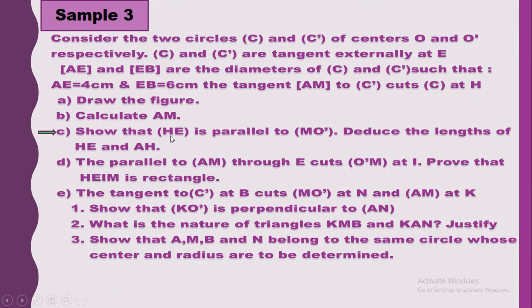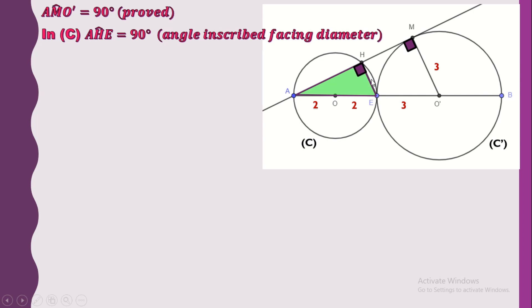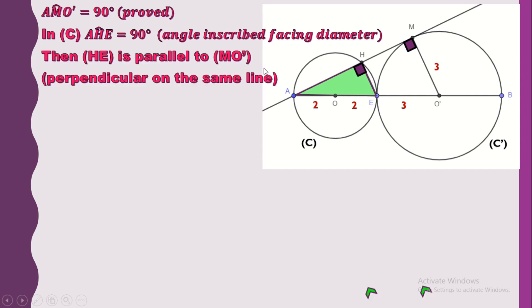Now in part C, show that HE is parallel to MO prime, then deduce the lengths of HE and AH. Note that H is a point on circle C, and whenever a point lies on a circle, the inscribed angle facing the diameter equals 90 degrees. So angle AHE equals 90 degrees. We have also proved that angle AMO prime equals 90 degrees. Therefore HE and MO prime are parallel to each other since they are both perpendicular to the same line.